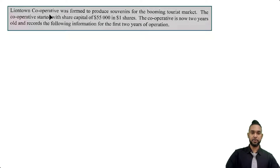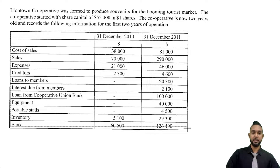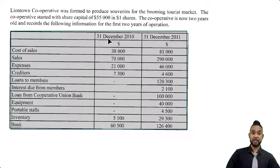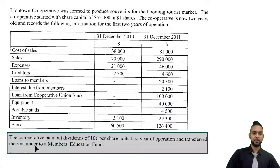Liontown Cooperative was formed to produce souvenirs for the booming tourist market. The cooperative started with a share capital of $55,000 in $1 shares, which means they have 55,000 shares. The cooperative is now two years old and records the following information for the first two years of operation. We have a table with columns for item names, balances at 31st December 2010, and 31st December 2011. The cooperative paid out dividends of 10 cents per share in its first year and transferred the remainder to a members education fund.